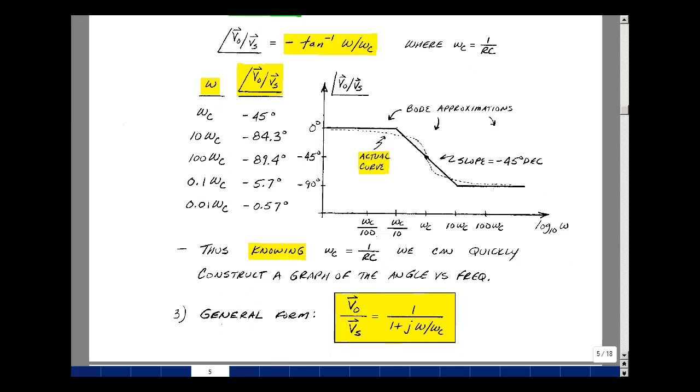And lastly, the general form of a low-pass filter is 1 over (1 plus jω over ω_c). Or ω_c is whatever your circuit turns out to be. And again, this could be an op-amp circuit. It could be an inductor circuit. It's different kinds of low-pass filters. And this is an introduction to sinusoidal frequency response in a low-pass filter.